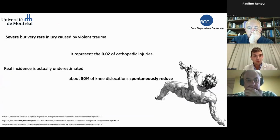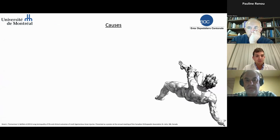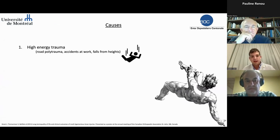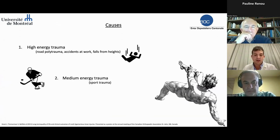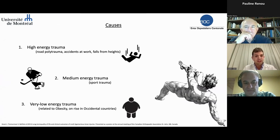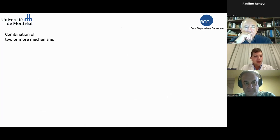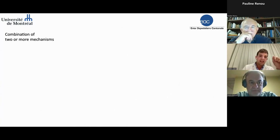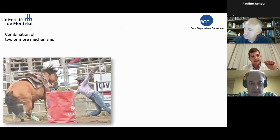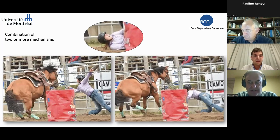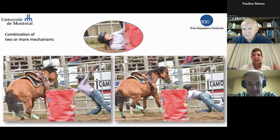Half of these dislocations spontaneously reduce before arrival at the hospital, so it's very insidious. The causes may be high energy trauma like car accidents or work accidents, medium energy trauma like in sports, and low energy trauma like in obese people — a growing number of patients. When we have a combination of several mechanisms, this is a case we operated in Montreal: a younger patient with knee hyperextension during sports — a catastrophe for her knee.